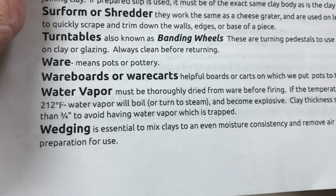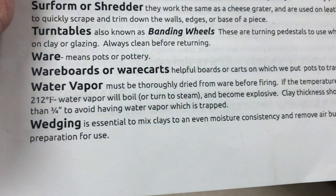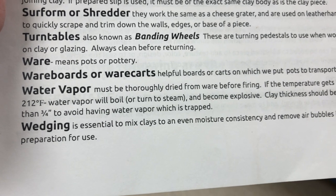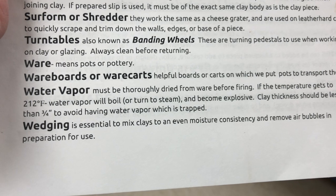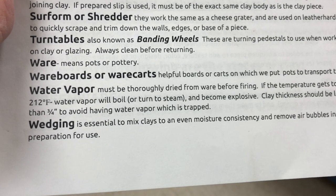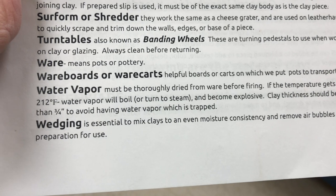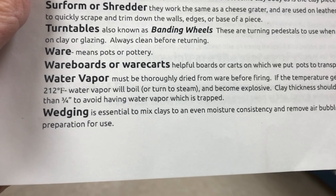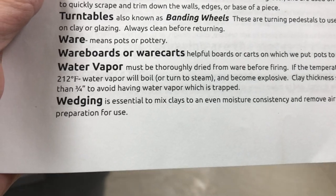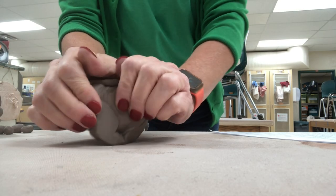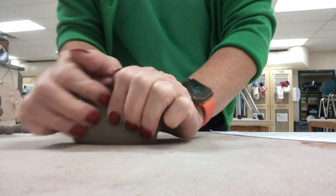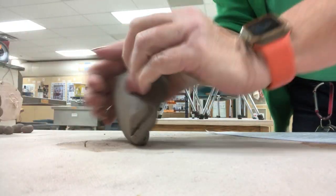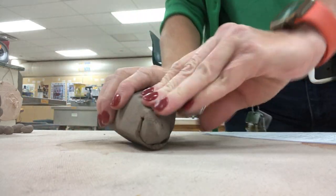Water vapor is dangerous when firing a pot. The pot must be absolutely dry because if it reaches 212 degrees with water still in it, the water vapor turns to steam and becomes explosive. Always make sure your pots are thoroughly dry. Keep walls a maximum of three-quarters of an inch thick so they can dry out properly. Wedging is when we mix and combine the clay by pushing it and rotating it into itself, ensuring it is of even moisture as we work.